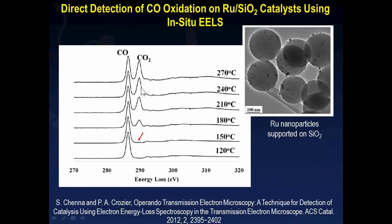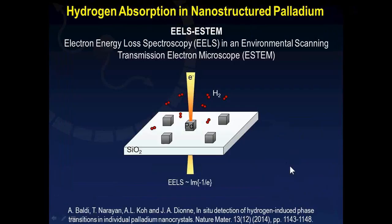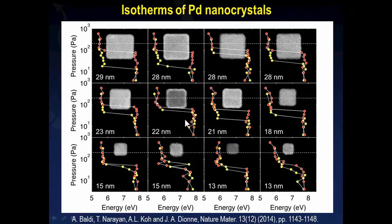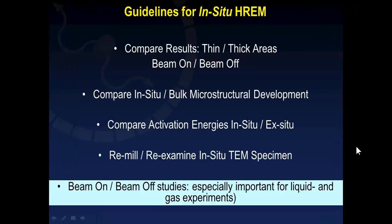At higher temperatures, the reaction occurs faster, and therefore there is higher intensity of the carbon pi-star peak associated with CO₂. Another example of EELS in an ETEM experiment is measuring the absorption and desorption of hydrogen in individual palladium nanocubes by monitoring the shift in palladium bulk plasmon resonant energies when palladium transforms to palladium hydride. We can also understand the hydrogen loading and unloading behavior of individual palladium particles by correlating their phase transformation with the size effects of the palladium particles.